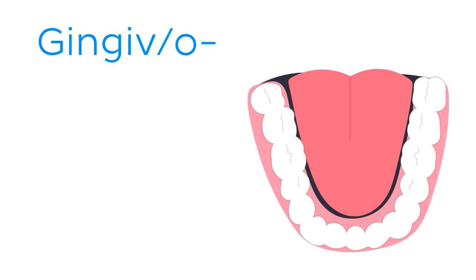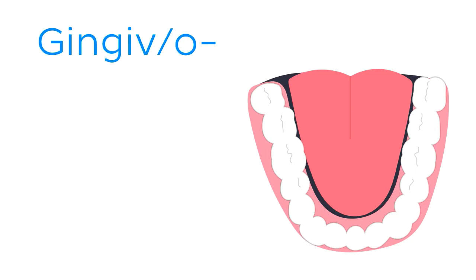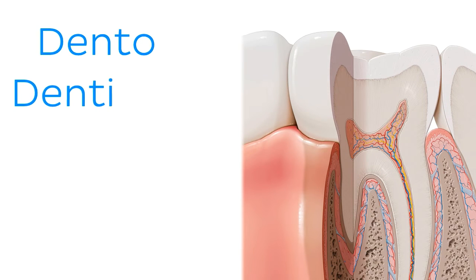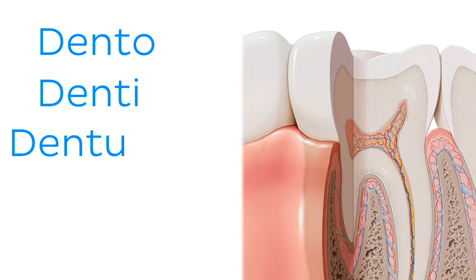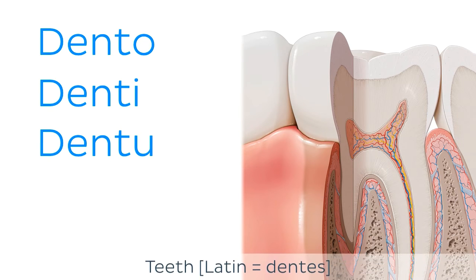'Gingiv' or 'gingivo' with the O at the end comes from the Latin word 'gingiva', meaning gums. You'll probably hear it most commonly in relation to gingivitis, which is inflammation of the gums. 'Dent' with an O, I, or U at the end of course refers to our teeth.